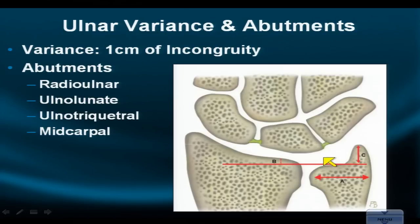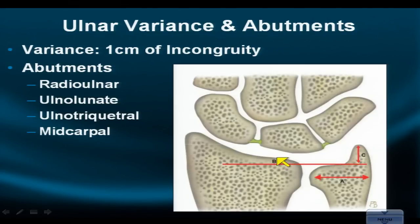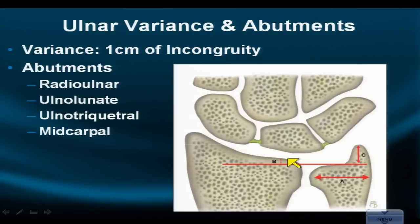When we look at this relationship on MR in a passive, neutral, non-extreme supination or pronation position, if there is a deviation between these two interfaces of more than a centimeter in either direction — in other words, the ulna is protruding more than a centimeter distal or is more than a centimeter proximal to this surface — then we'll say the patient has abnormal positive or negative variance posture.